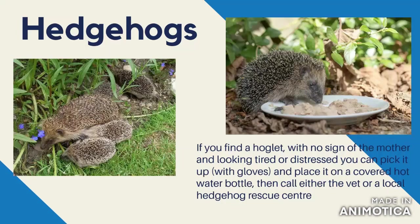Making a shelter means the food you put out will be eaten just by the hedgehog, keeping birds and cats away from it. You can buy a pre-made shelter or make one yourself. If you find a hoglet — a baby hedgehog — in autumn, it will likely need some help as there's not much food around. If the hoglet looks tired or distressed, pick it up with gloves, place it on a small hot water bottle, and call the vet or local hedgehog rescue centre.